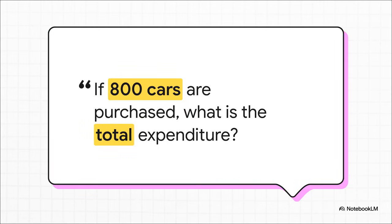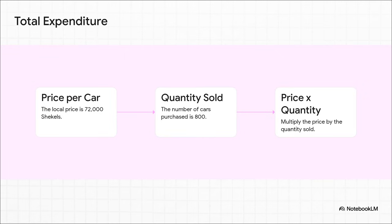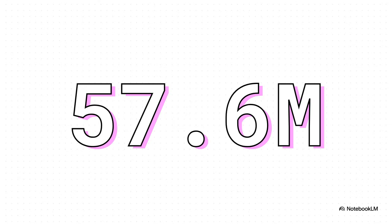So let's make this real for a second. Let's imagine that at this 72,000 shekel price, there's enough demand for people to go out and buy 800 of these cars. So how much money are we talking about in total? What's the whole market worth? To figure that out, the math is again super straightforward. You just take the price of one car, that's our 72,000 shekels, and you multiply it by the number of cars that got sold, in this case 800. And whoa, that number really shows you the scale we're talking about. The total expenditure comes out to 57,600,000 shekels. That's the total value of all 800 of those cars sold in the local market.